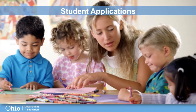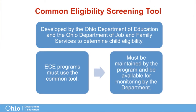Before we get into the technical details of student applications, I'd like to review the child eligibility changes from last year. Starting back on June 26th, programs must use the common application developed by the Ohio Department of Education and the Ohio Department of Job and Family Services when determining child eligibility. Any child enrolled after June 26th will be required to use the form. Programs must keep the form on file for review. Keep in mind that the directions on the form are aimed towards the family, not the provider.